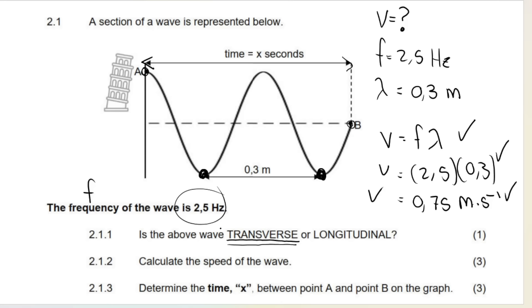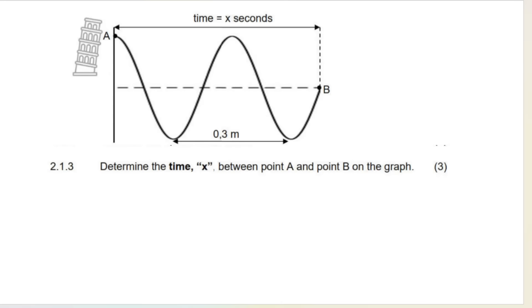Then question 2.1.3 is slightly more difficult. They want the time x between points A and points B on the graph, and that is worth three marks. So when we are working out time on a graph, it has to do with what we call period. Just so you can be reminded, I have done videos on this, but the period is the time taken for one wavelength to complete. So the period would be between A and that point over here. That would be the period, but they're not asking for that. They're asking for the time between this point here and this point here.